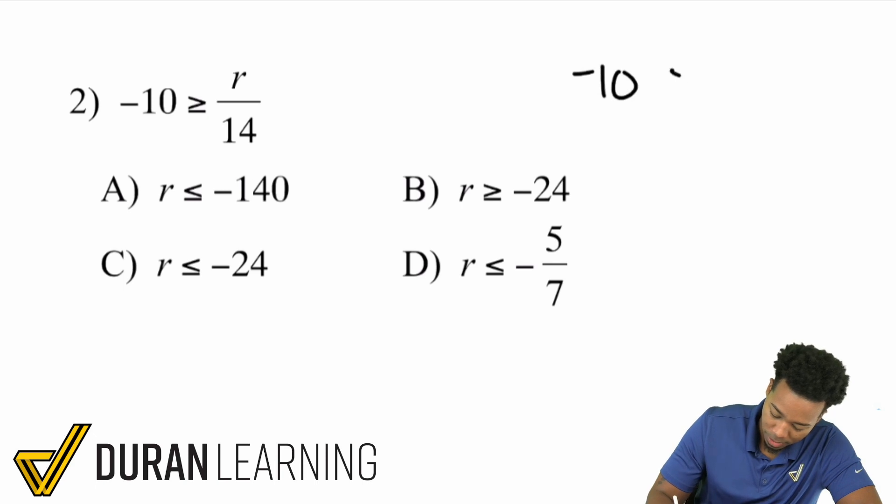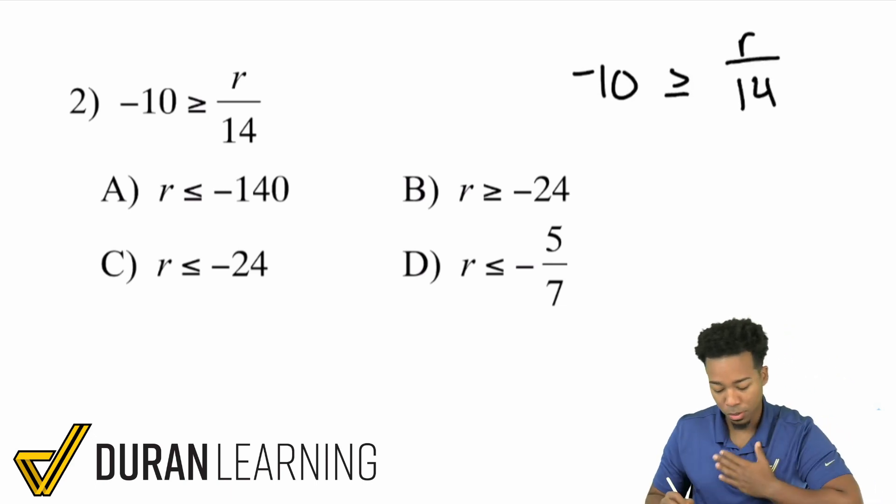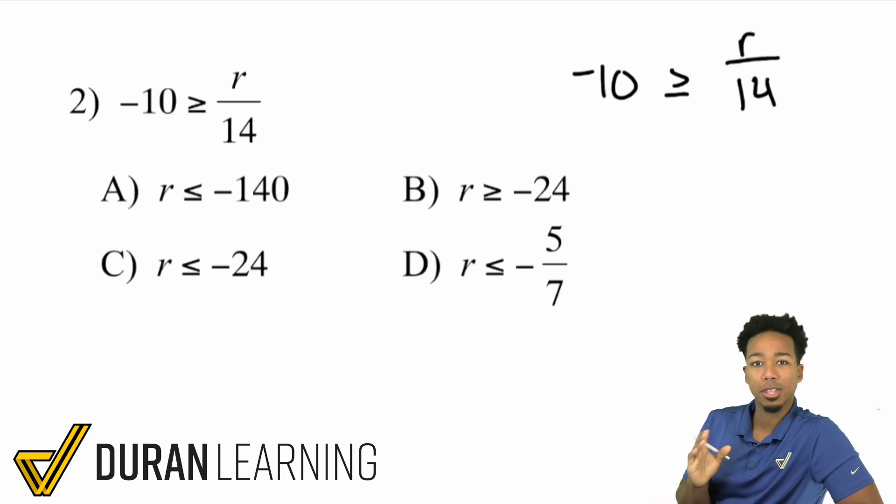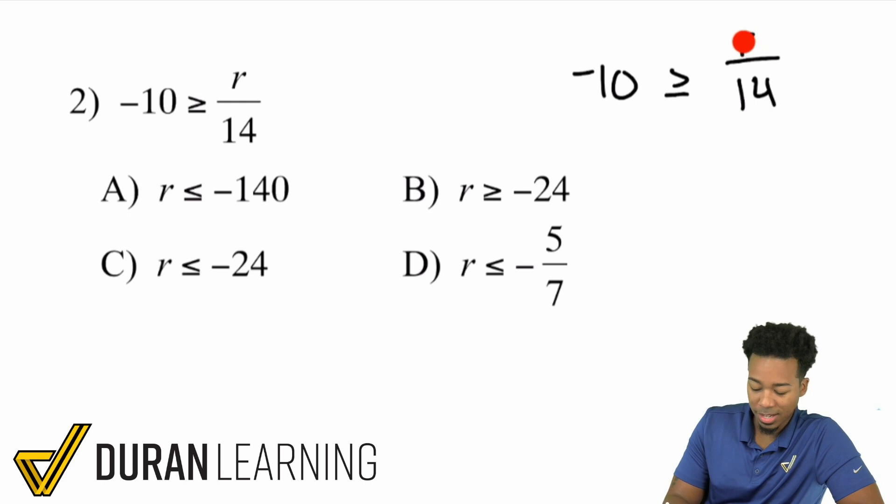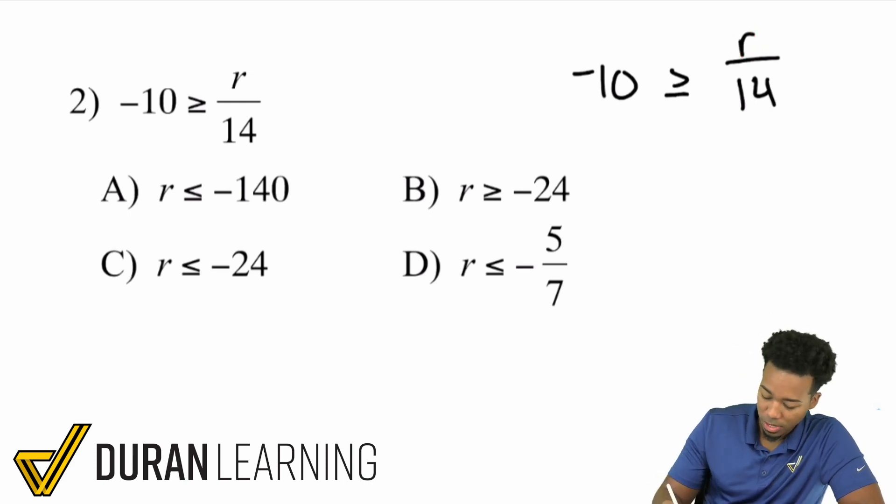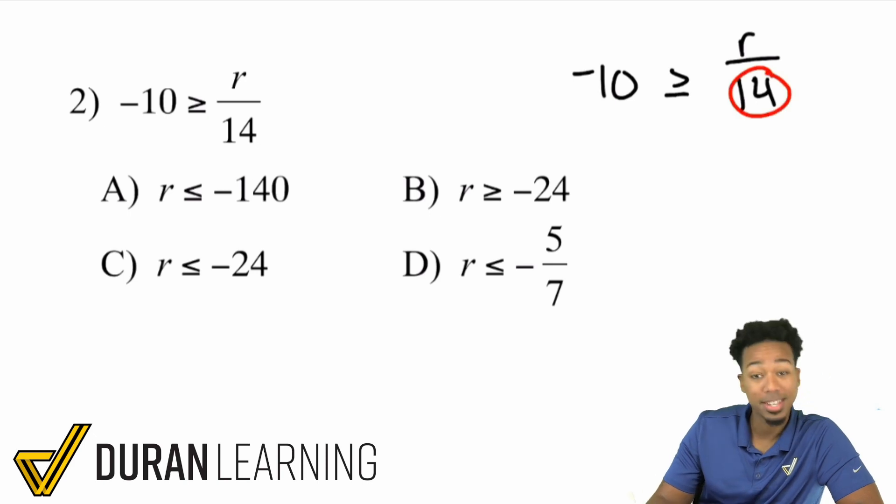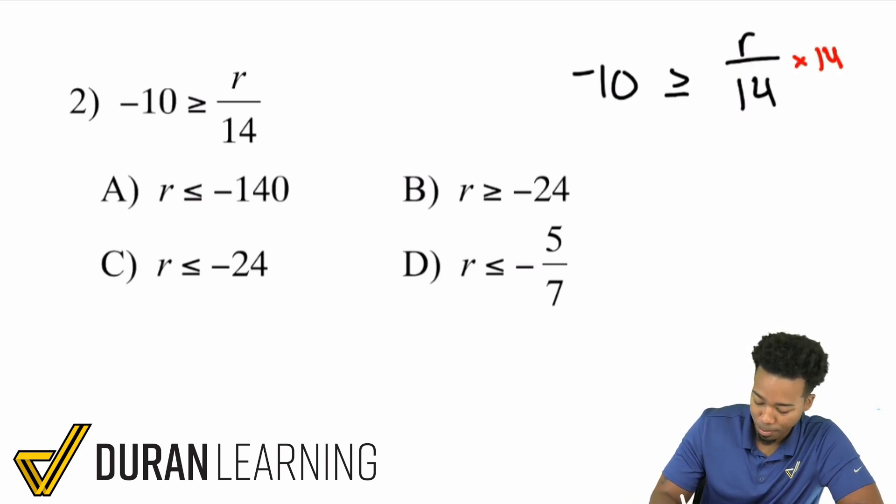So negative 10 is greater than or equal to r over 14. So there's going to be something pretty interesting about this problem over here, because you're going to see that the variable is on the right side. So I'm going to show you how to deal with that. So first and foremost, I'm looking at this and I'm saying, hey, let's get rid of that 14. So let's multiply both sides by that positive 14. Again, you're multiplying by a positive, so no need to worry about that rule right now.